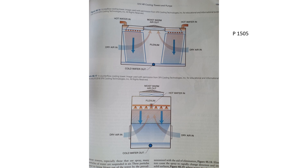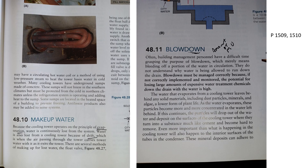On page 1505, there is a cooling tower diagram. The one at the top pulls dry air in from the sides and pushes moist warm air out the top — figure 48.16. This is a cross-flow cooling tower. You also have counter-flow as well; either type is fair game on the exam.